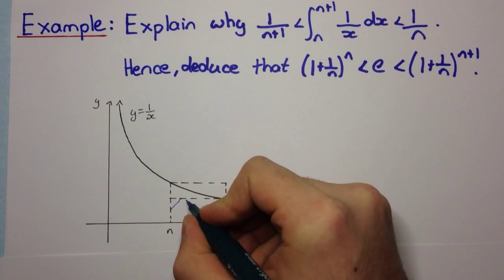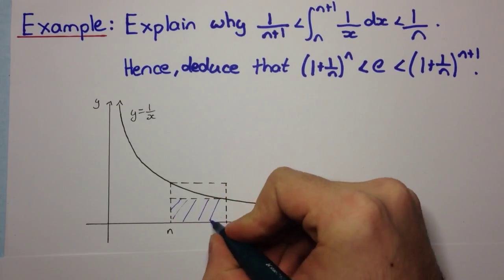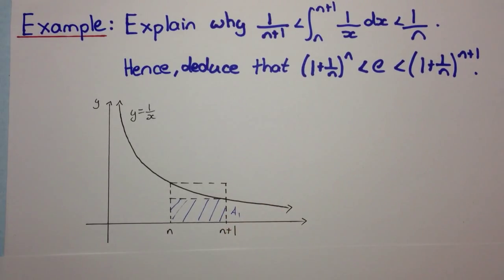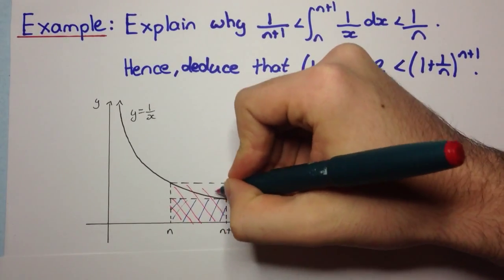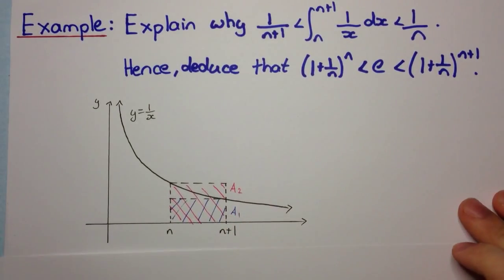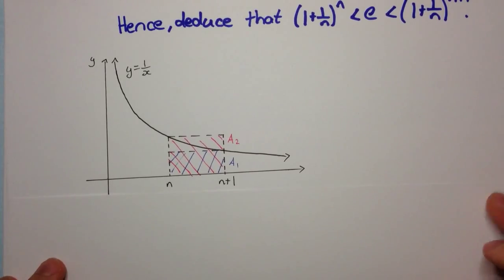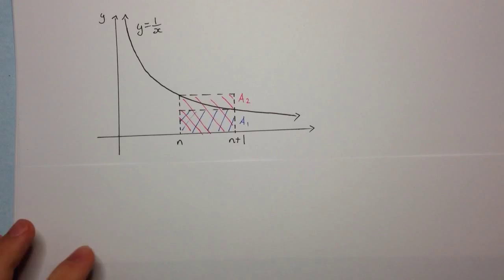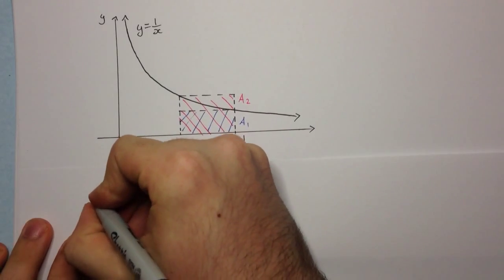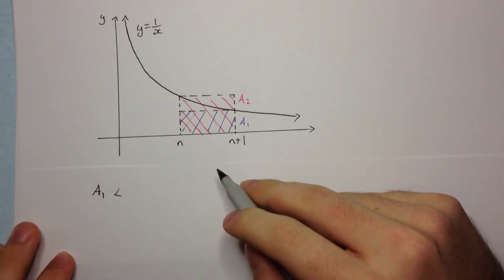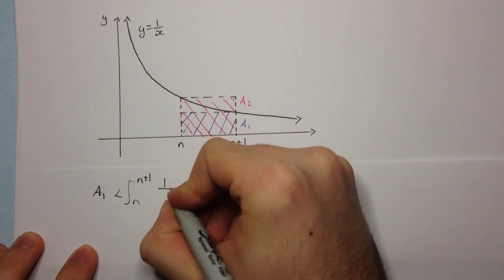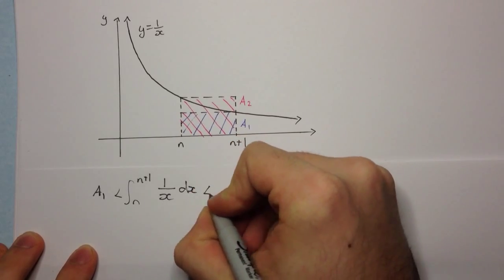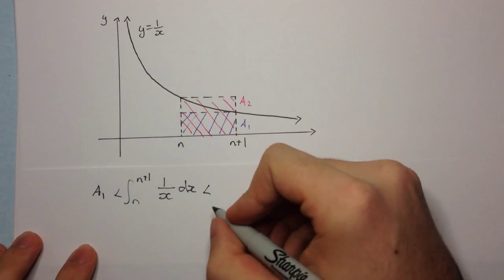If we consider this area here, let's call that A1 — so A1 is our lower bound. And this area here, we'll call A2 — that'll be our upper bound. We know that A2 overestimates and A1 underestimates. So we can say that A1 is less than the area under the curve given by this integral, which is less than the overestimating area A2.